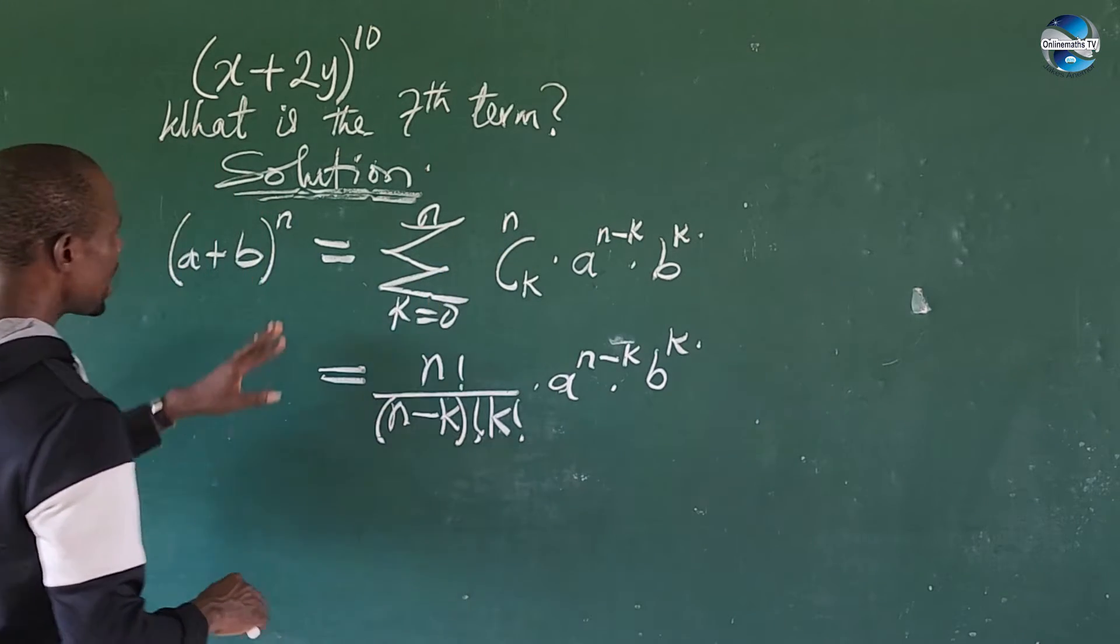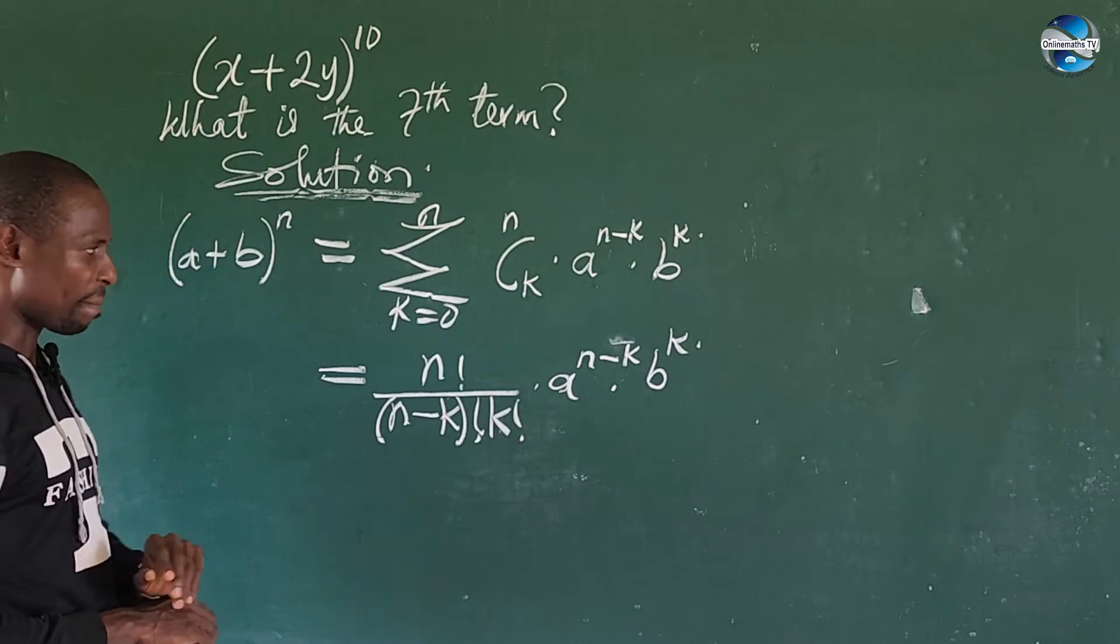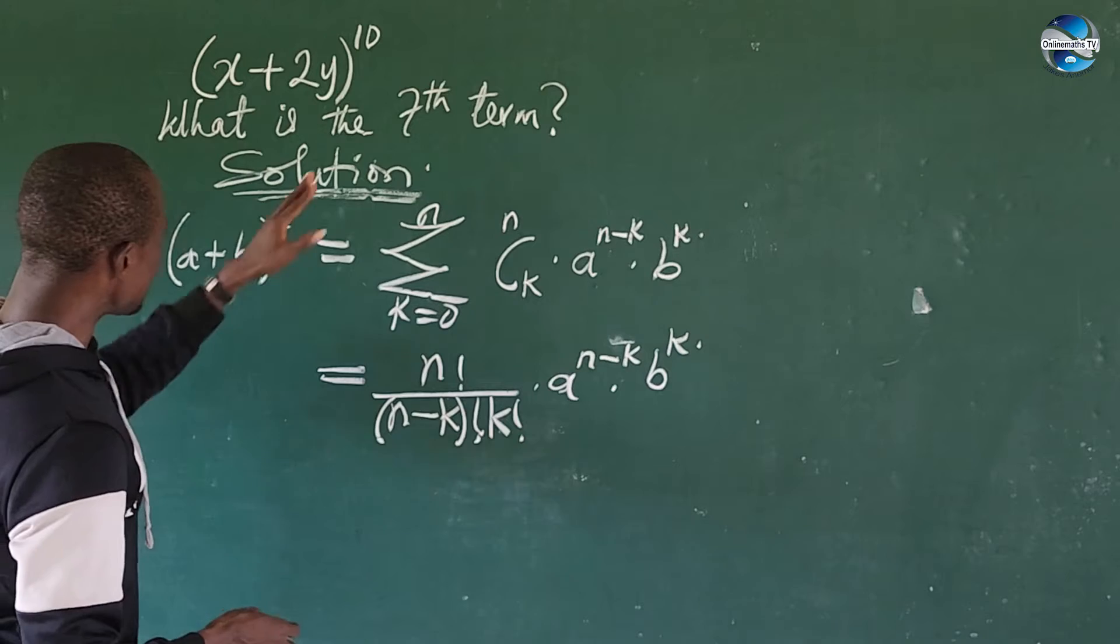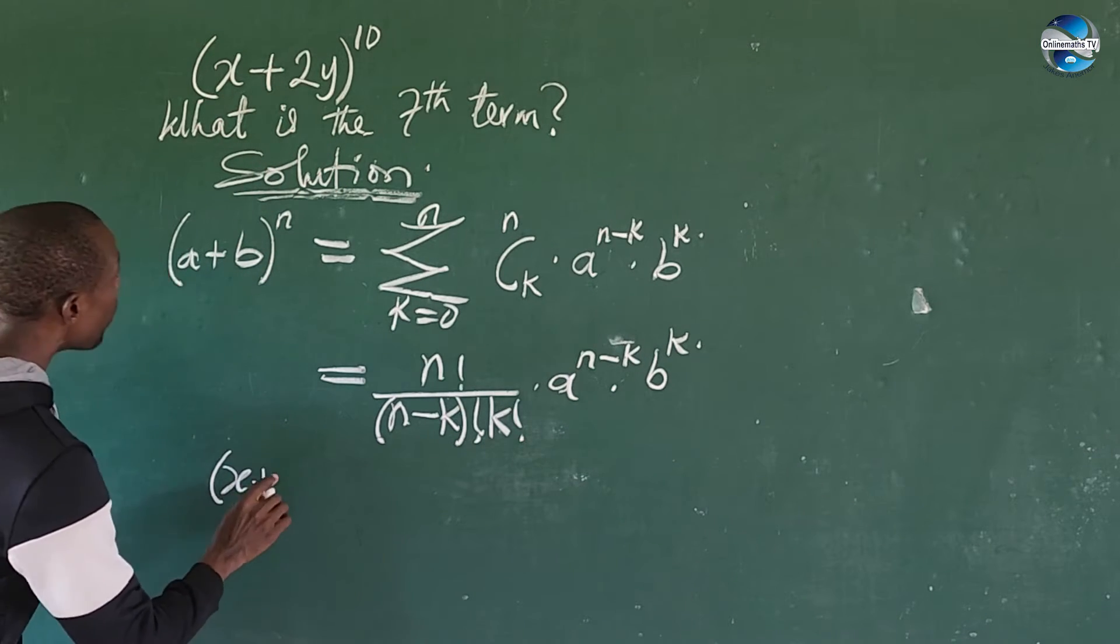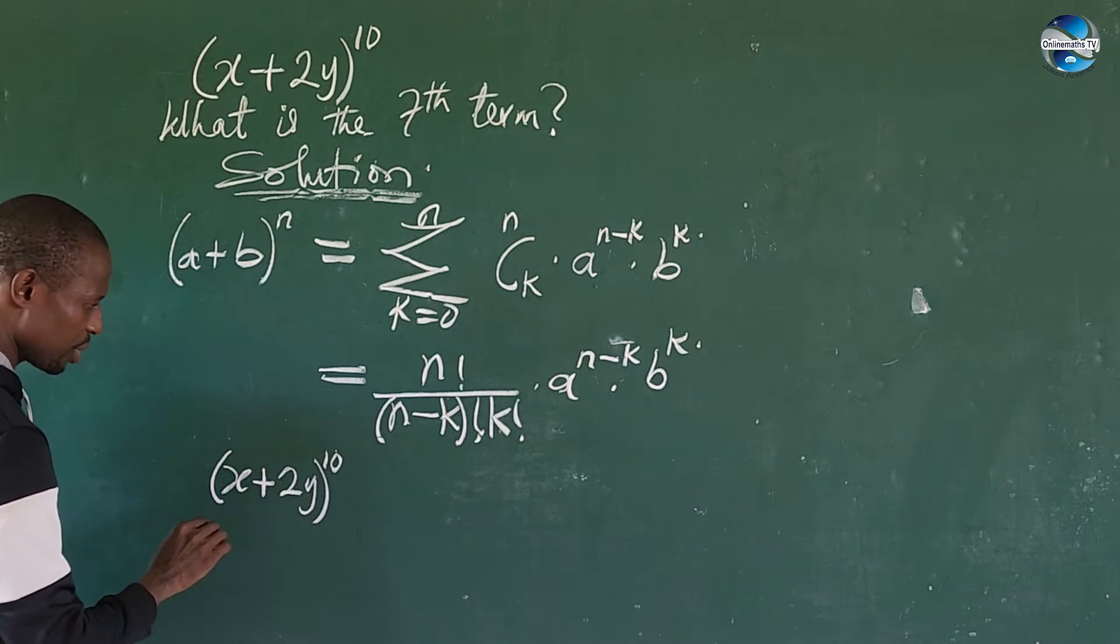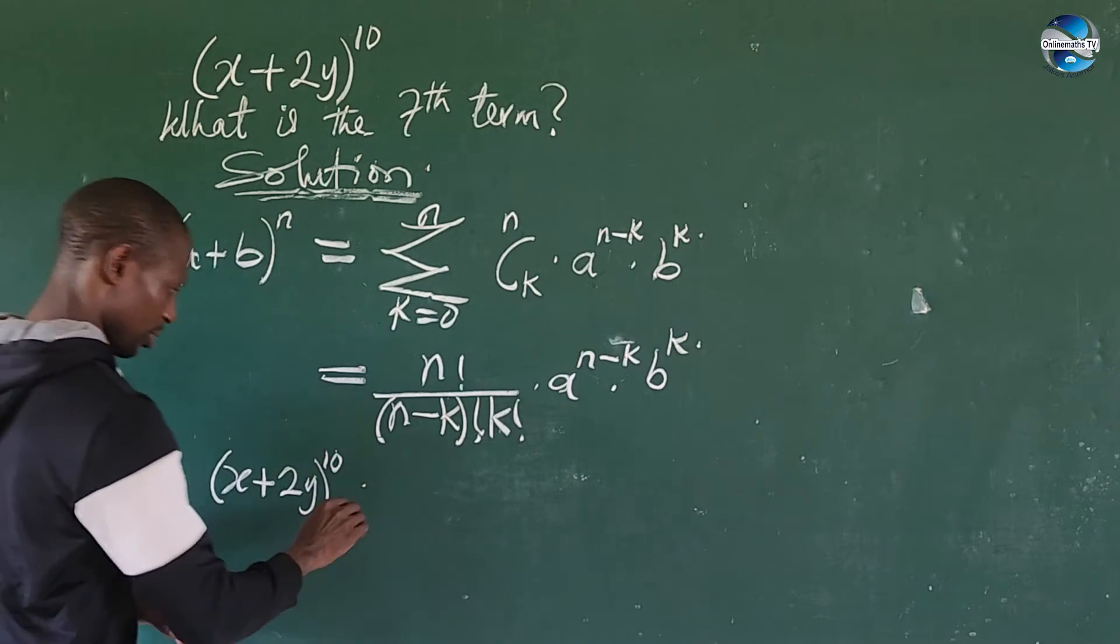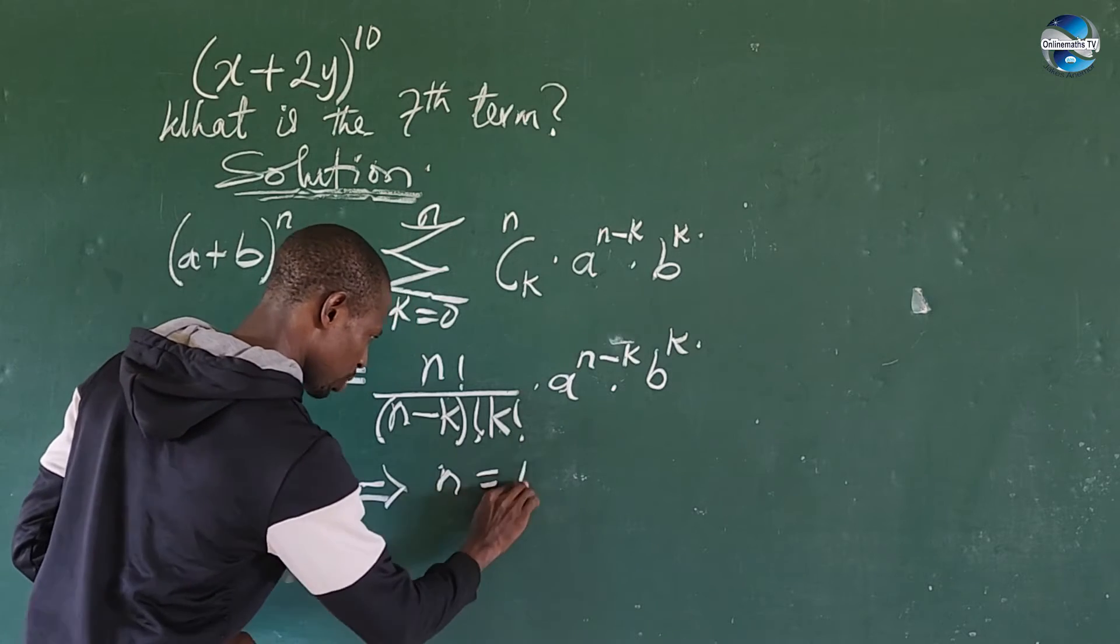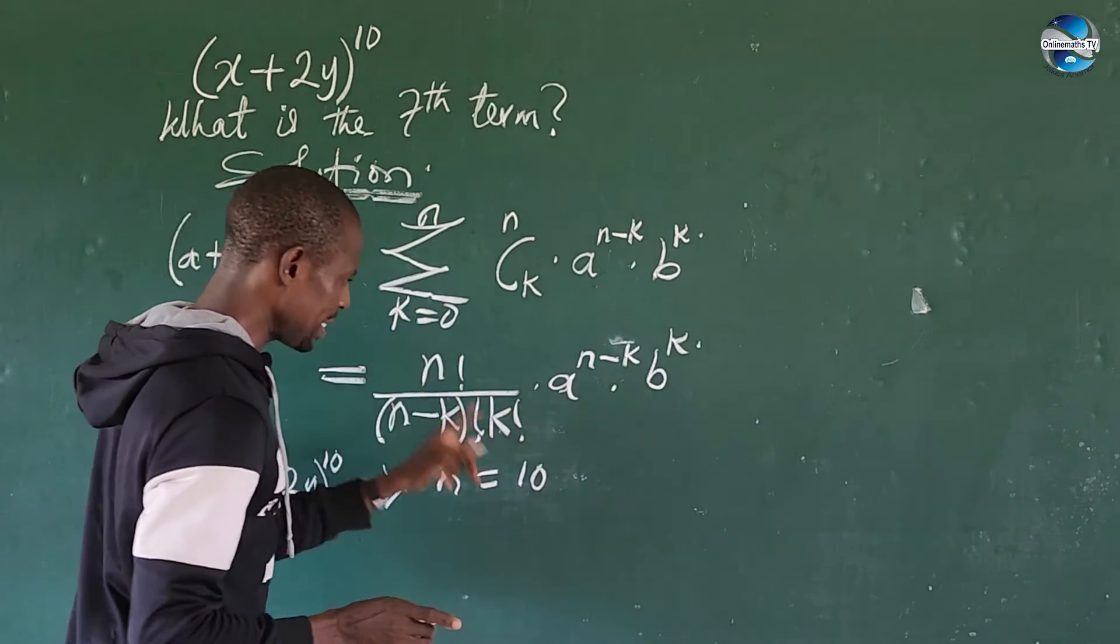So how do we get the seventh term of this expansion here now? Let's get the value of n and the value of k from this expansion. So from here, we have (x + 2y)^10. So from here, we discover this implies that our n is equal to 10. Easy. So n here is 10.